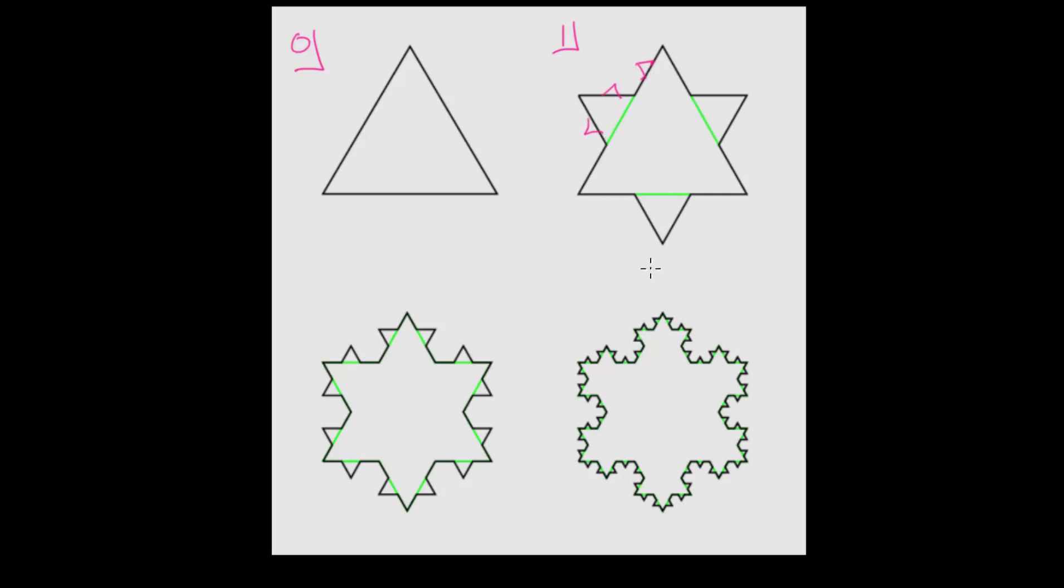Of course, this can be tricky to draw by hand, but if you let computer software draw it, we can get a much better image. Replacing all of these middle sections on these side lengths with equilateral triangles leads to this image, which we can call step 2.